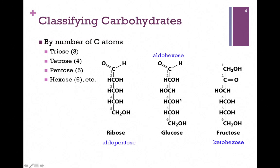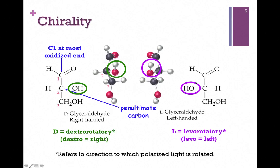Notice the numbering of those carbon atoms. If it's an aldose, carbon number one carries the carbonyl group. If it's a ketose, carbon number two carries the carbonyl group. We number our carbohydrates by starting at the most oxidized end — that will be carbon number one — and then number them down the chain.